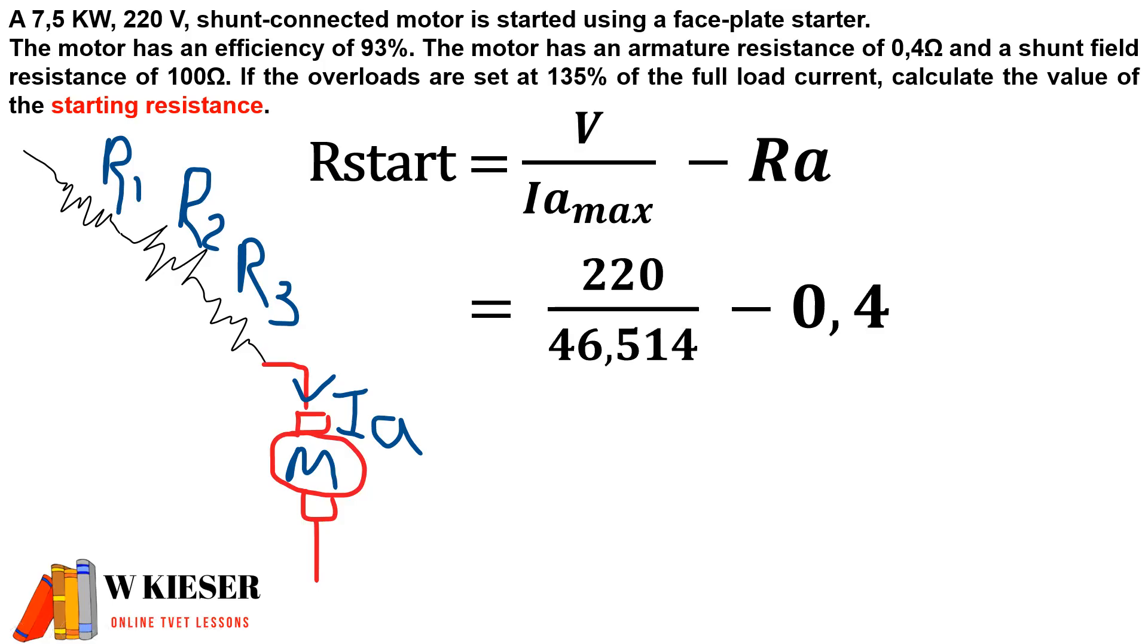Now we can substitute all these values into our formula. The terminal voltage of 220 volts divided by Ia max less the armature resistance implies that the start resistance here should be 4.33 ohms.